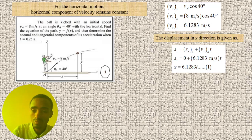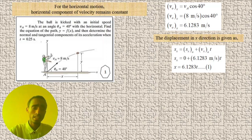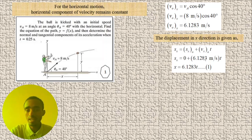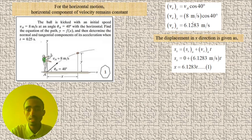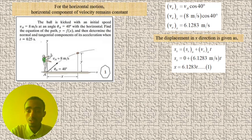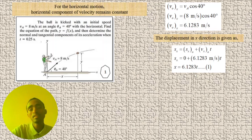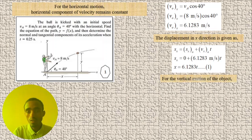The horizontal displacement is given by sₓ = sₓ₀ + vₓ₀ · t. Assuming the initial position is zero, and with vₓ₀ = 6.128 m/s as already calculated, we substitute time t to get: sₓ = 6.128t, which is the horizontal distance in the x direction.